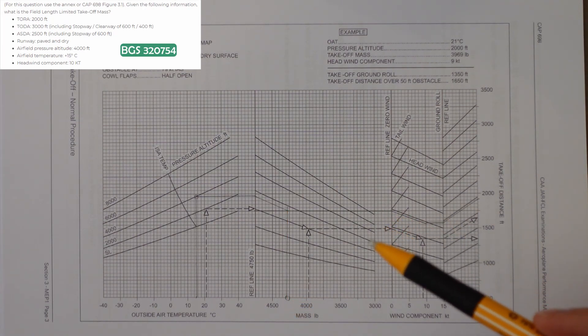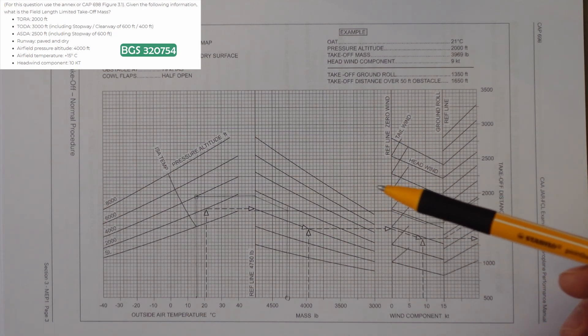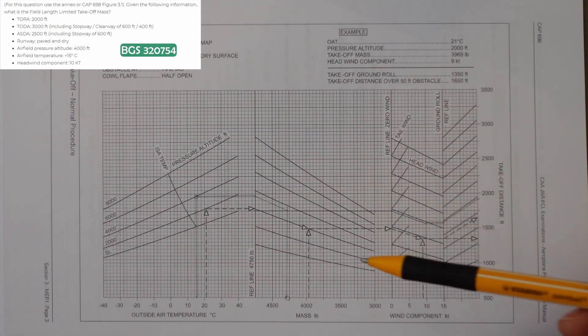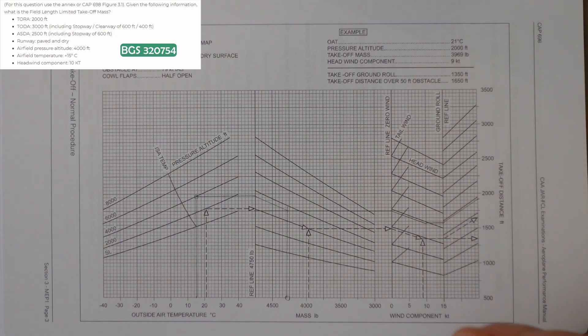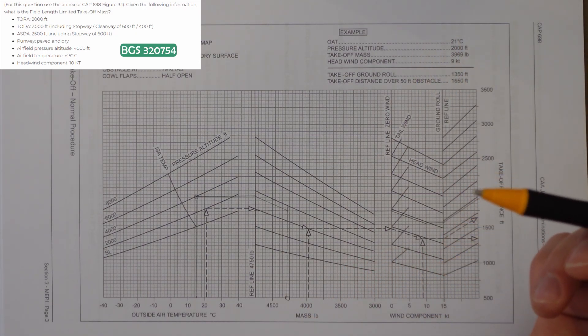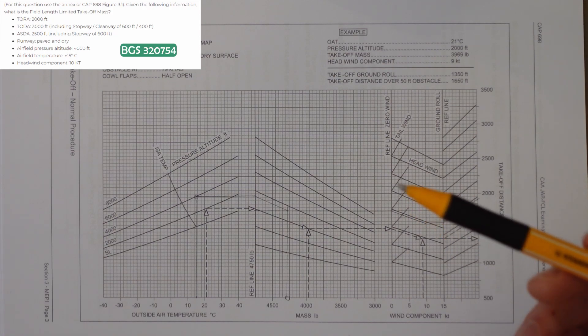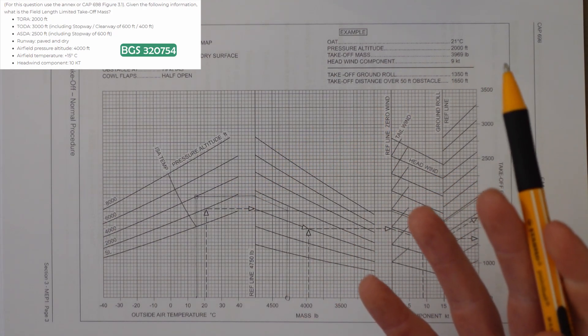The answers available were 4,750, 4,050, 4,550, and 3,950. So none of the answers are quite correct, but the only one that's really that close would be 4,550. So that's the one we would pick.